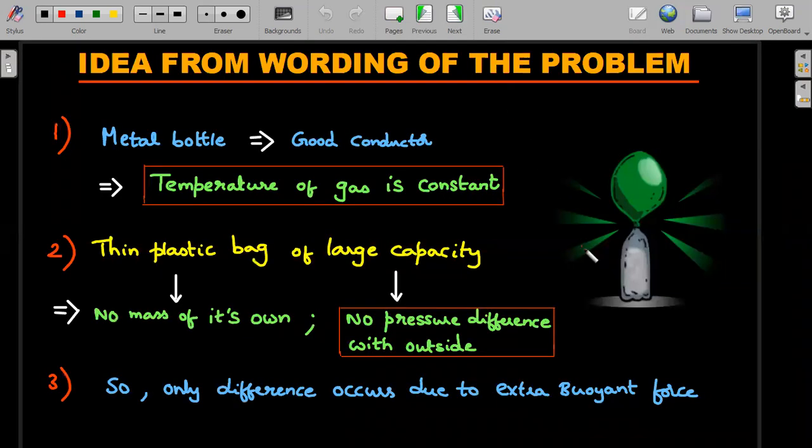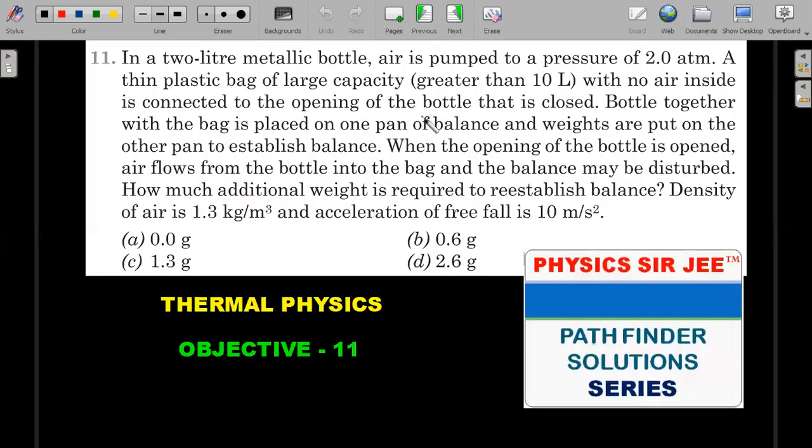The idea from the wording of the problem: reading the question very carefully is one of the important things for your JEE examinations and also for olympiad exams. Especially when the question has more than six to seven lines, noting down the important words in the question solves the problem to half of it.